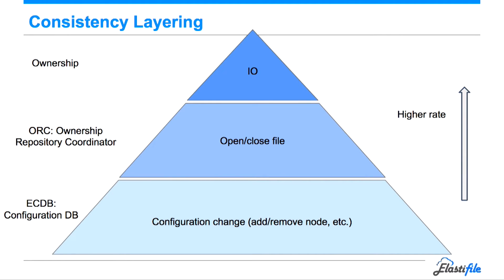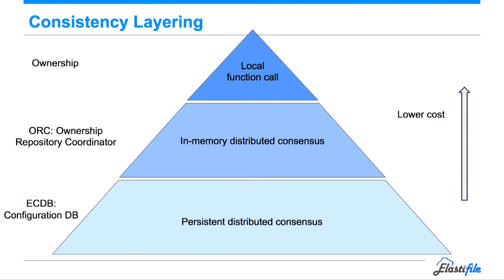As you go up this pyramid, you get a higher rate of operations. Configuration changes are very seldom. Open and close of a file — which is what we need for the ORC service — is when you first access a file or when you're done and releasing ownership. That's the rate at which we access the ORC. And then ownership is accessed every IO. For that, we want the lowest cost. The topmost ownership layer is a local function call because it knows it's the only accessor of the file.